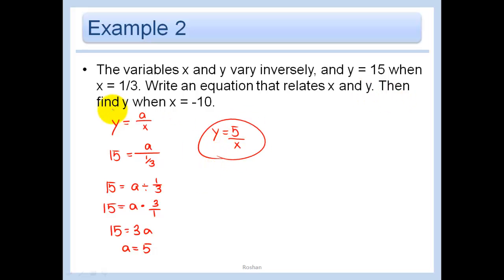And then it says find Y when X equals negative 10. So when X equals negative 10, we have Y equals 5 over negative 10. In other words, negative 1 half.